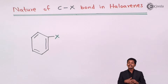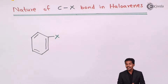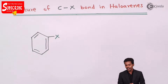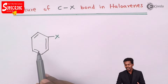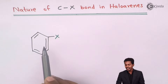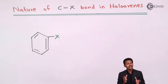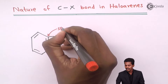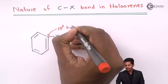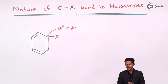We are going to talk about the nature of the bond between carbon and halogen in haloarenes, which we can understand with the help of an example. Here I have mentioned an aromatic hydrocarbon, basically benzene, and a halogen atom X is being attached to it. This halogen atom is attached to a carbon atom that is sp2 hybridized.